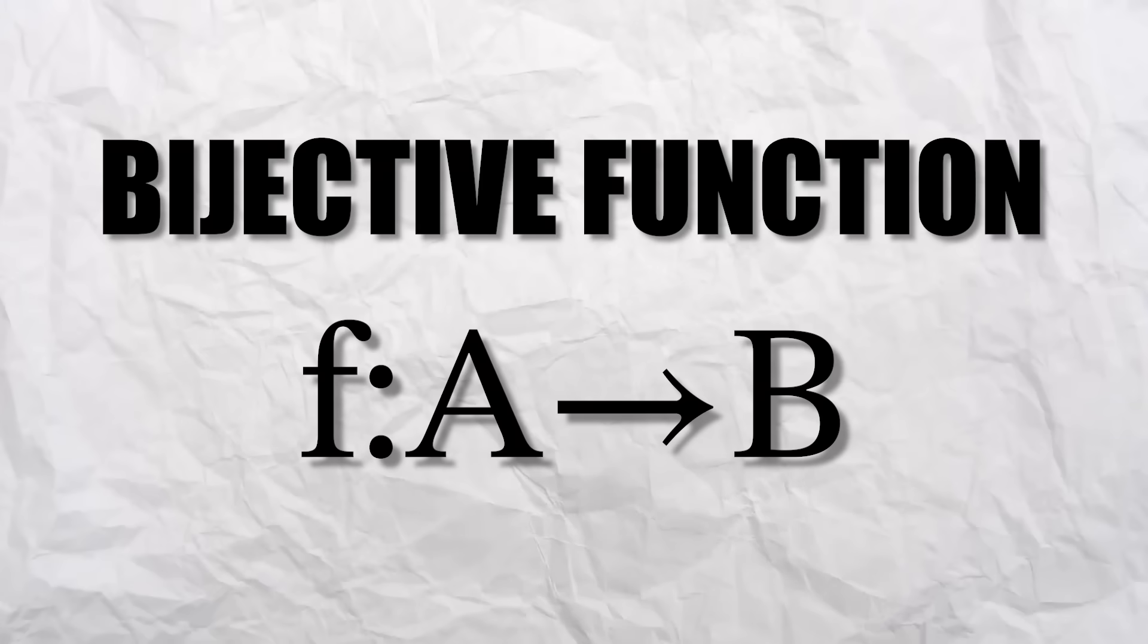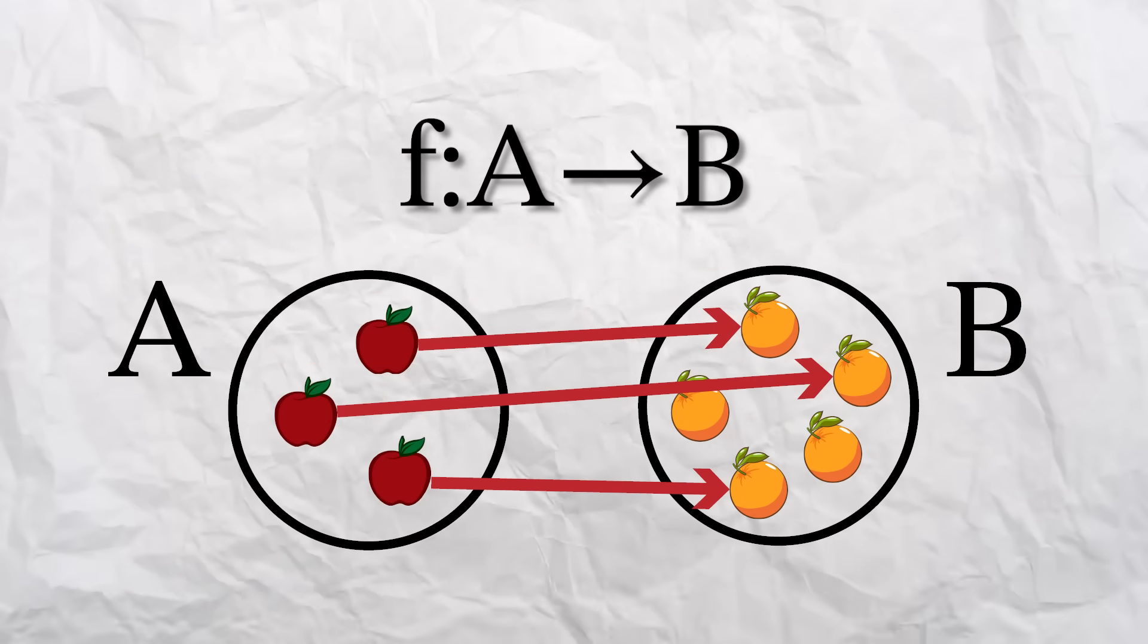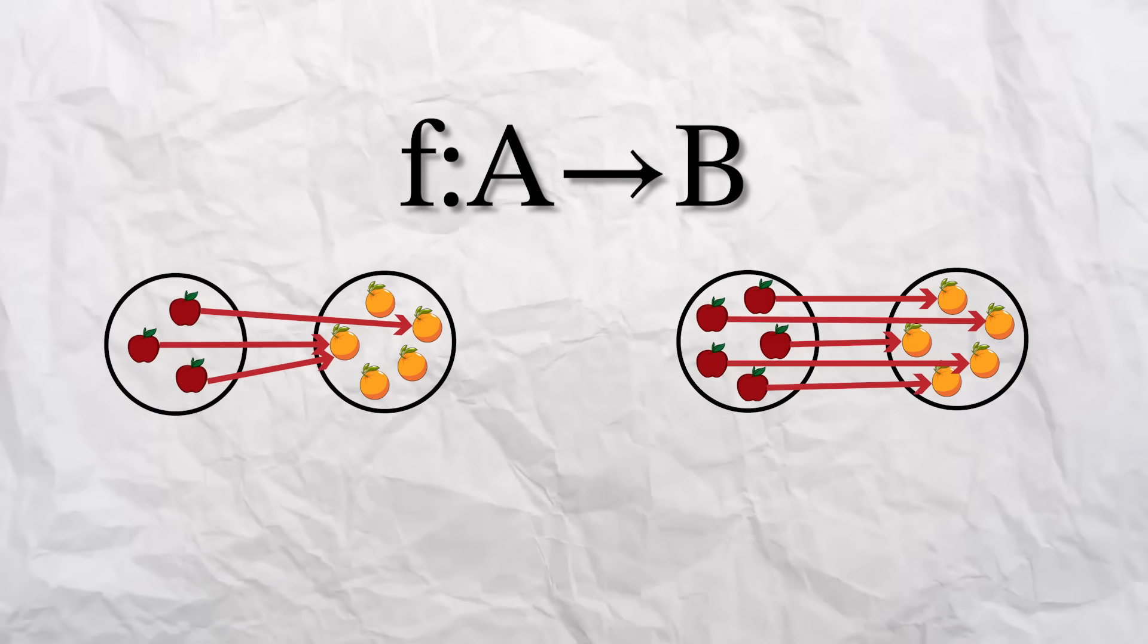Well, we have to bring in the idea of a bijective function. A function from a set A to B maps every element from A to exactly one element in B. For example, this is a function, this is a function, and this is a function.